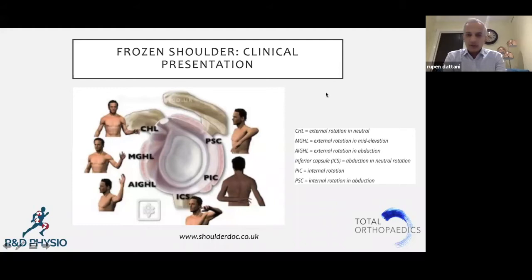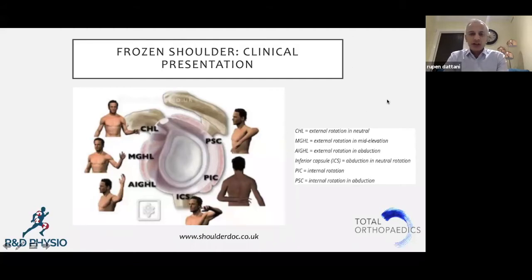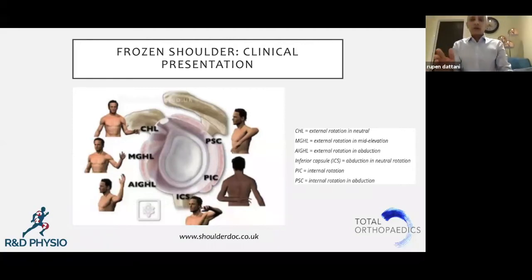This diagram helps to explain which structures are affected and cause which restriction in range of motion. Classically what we're taught is the lack of external rotation. If you had to do one test, I would say that it would be the test to do, because you've just got to compare your external rotation compared to the other side.